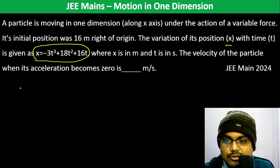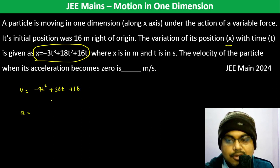its acceleration becomes zero. So first, let's find velocity by differentiating: v = -9t² + 36t + 16. For acceleration, differentiate again: a = -18t + 36. This equals zero when t